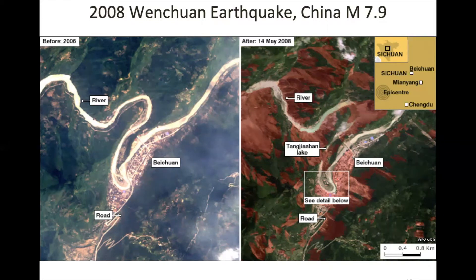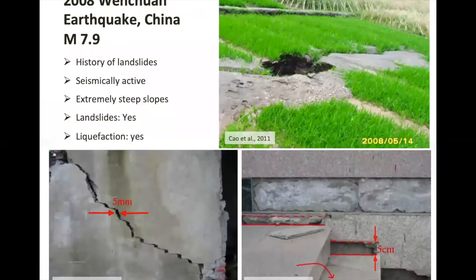Here in the Sichuan province of China, the 2008 Wenchuan earthquake triggered thousands of slope failures. You can see the high density of landslides near the river right after the earthquake. Around 20,000 people were killed by earthquake-triggered landslides alone. The landslides from the Wenchuan earthquake were so intense that the river was dammed by a landslide deposit and a lake formed, flooding buildings nearby.